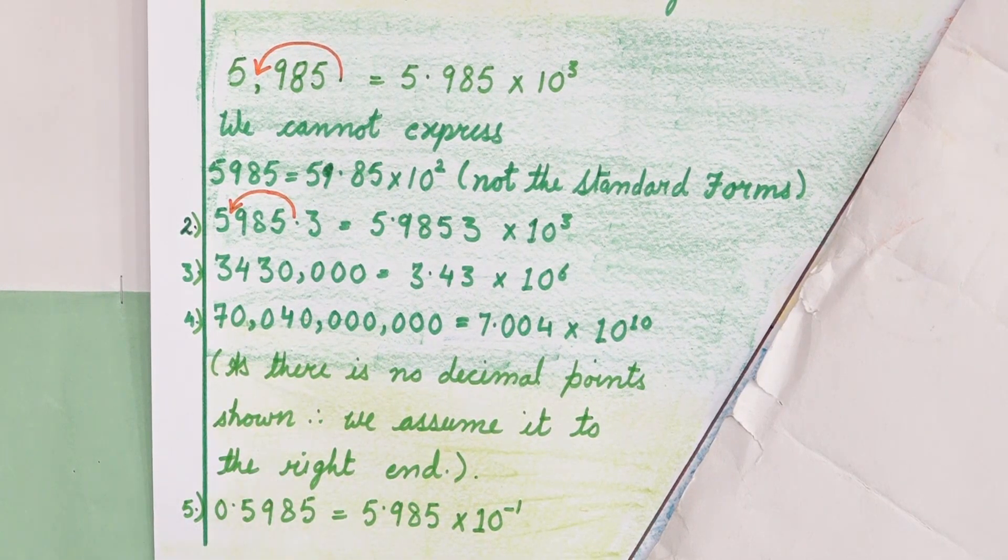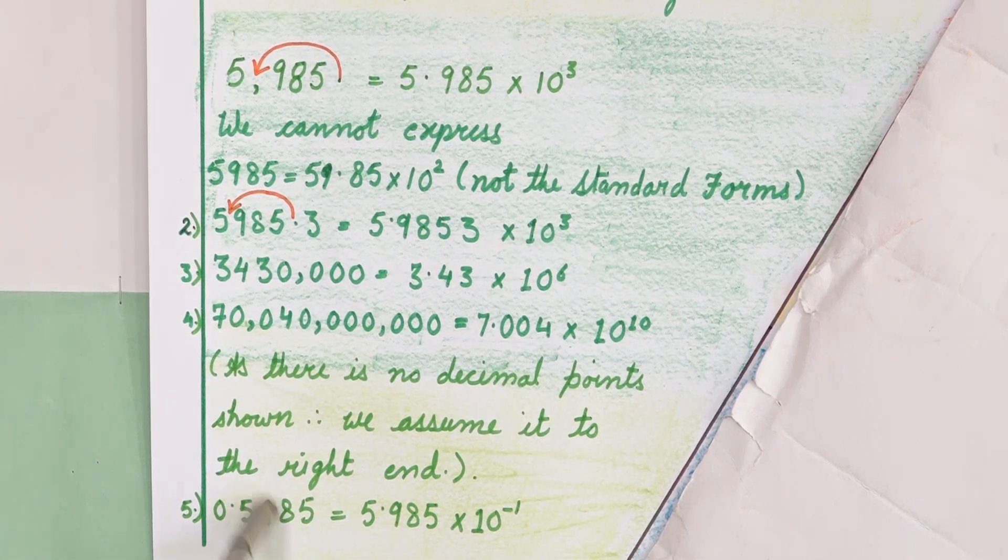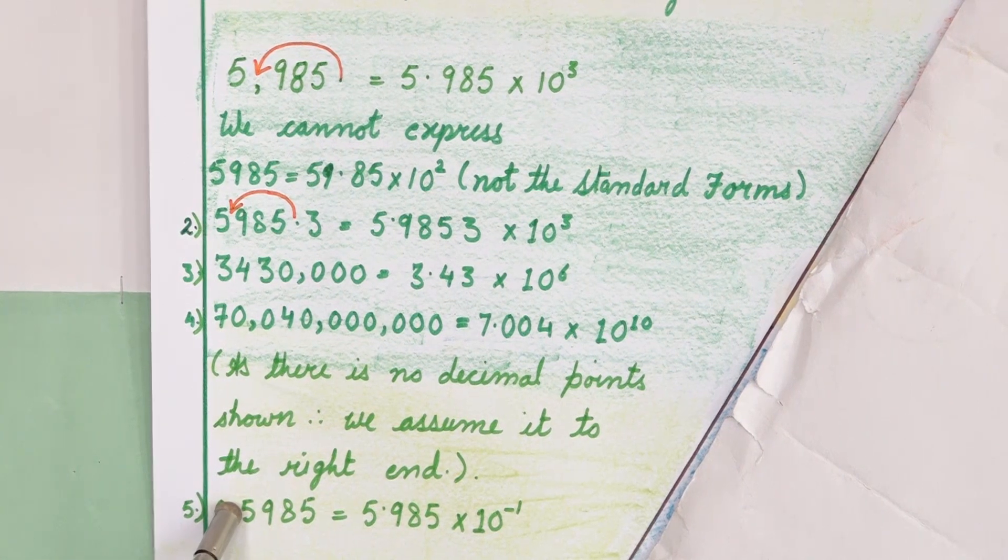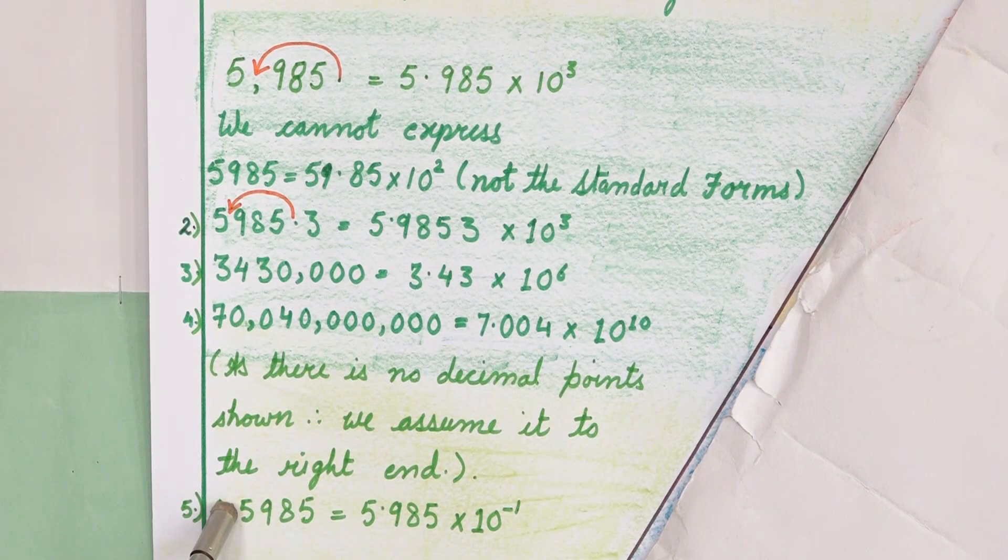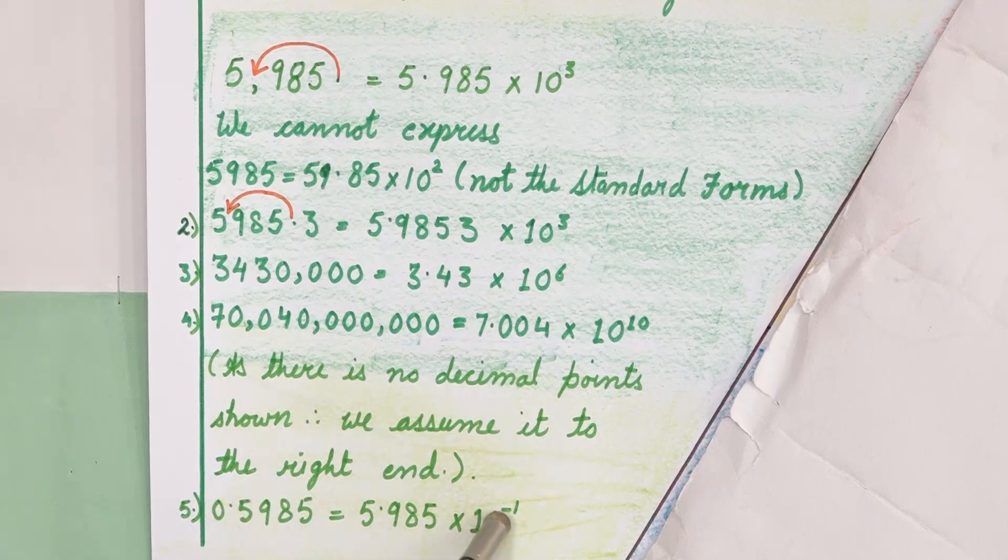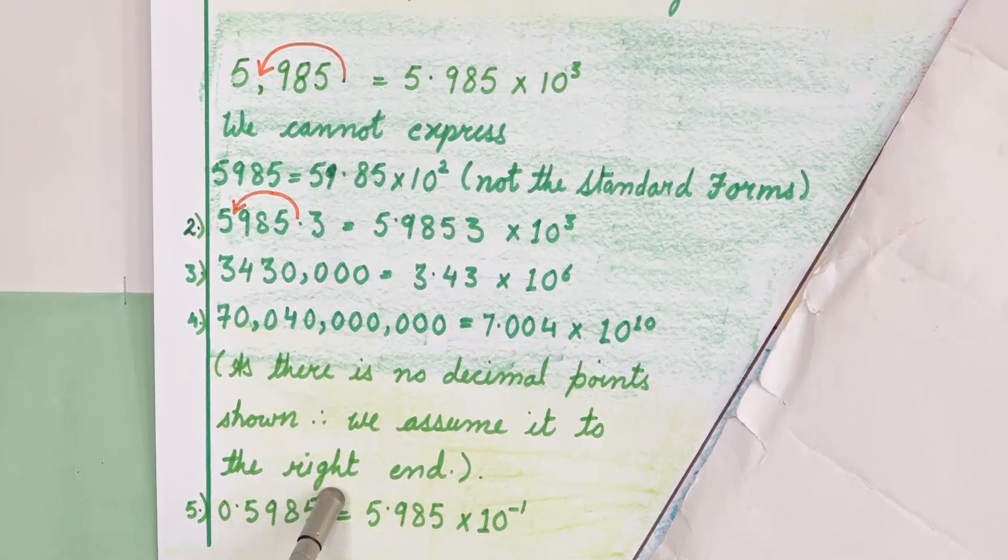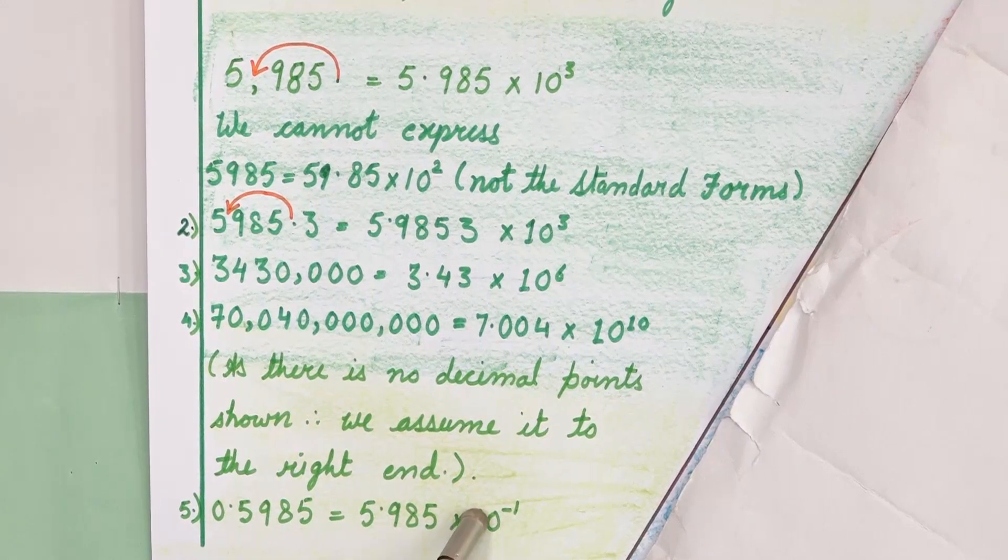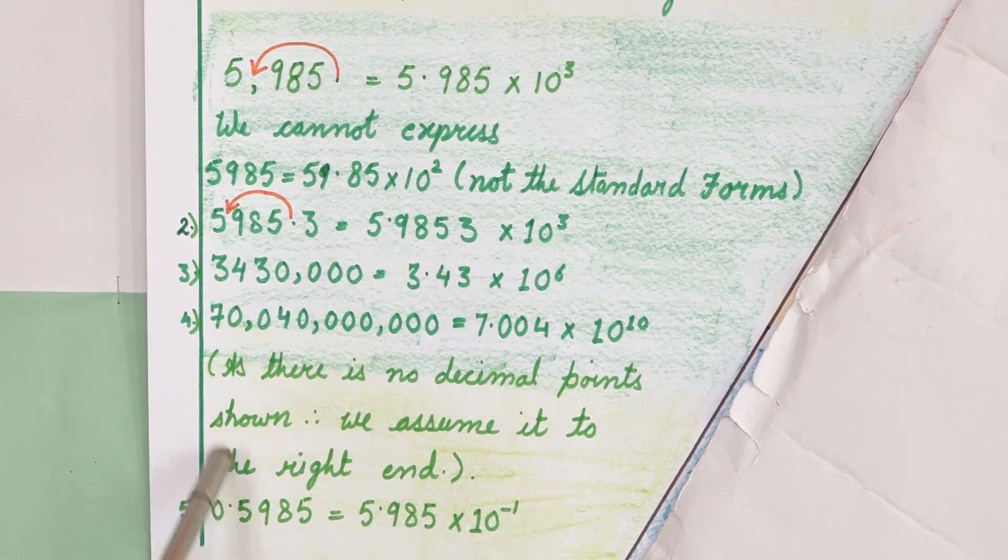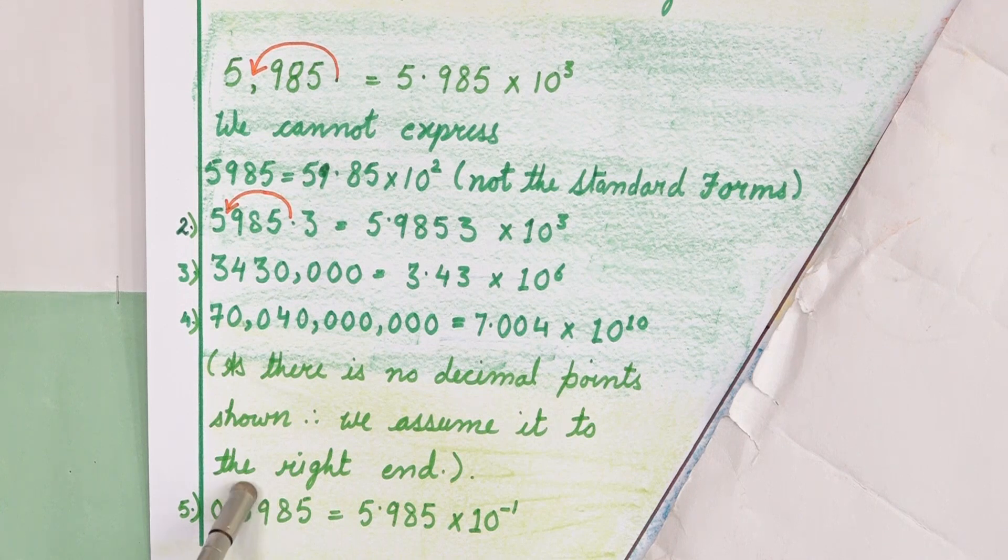Now look at this example. In this example we have decimal sign on the left side. And once we are going to shift from left to right our exponent will be negative. So 5.985 multiplied by 10 raised to the power minus 1, because we have shifted only one place.